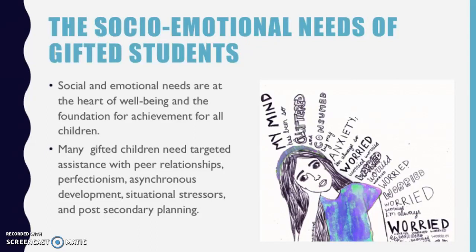Many children need targeted assistance with peer relationships, perfectionism, asynchronous development, stressors, and post-secondary planning. By post-secondary, going into college or higher education, they need to have a better plan to do exactly what they want to do, since many of them are looking into going into one of the prestigious universities.